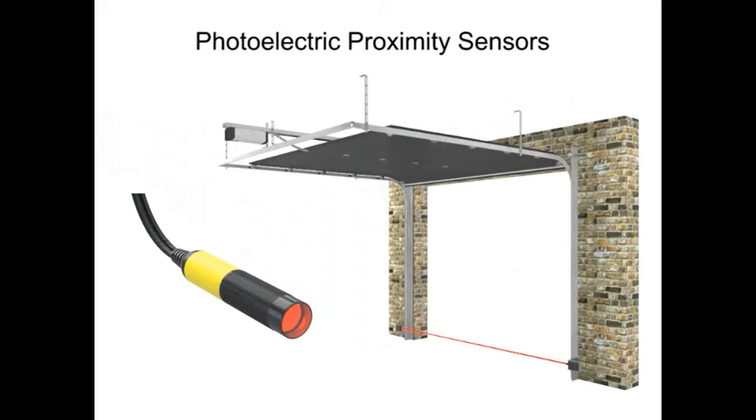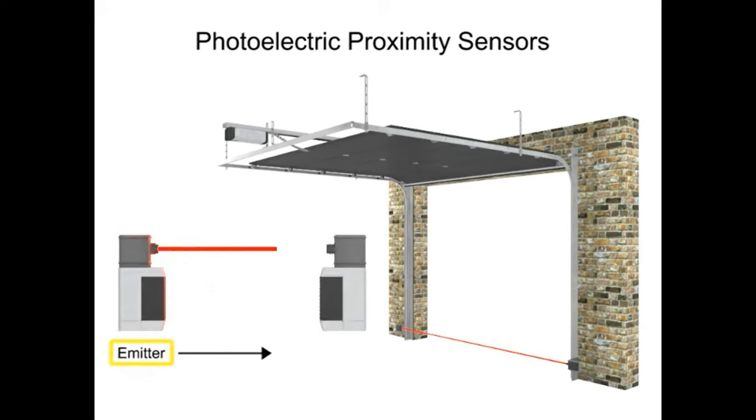Photoelectric sensors have the greatest detection range from 1 mm to 25 meters or more. They operate by the use of an emitter, which transmits a beam of light to the receiver. When the light is normally being received, it is known as a dark operated mode. When the absence of light is required, it is known as light operated mode.